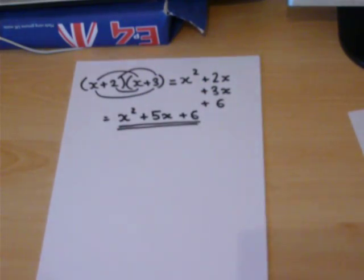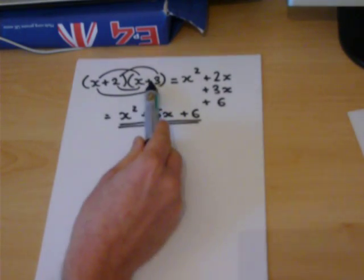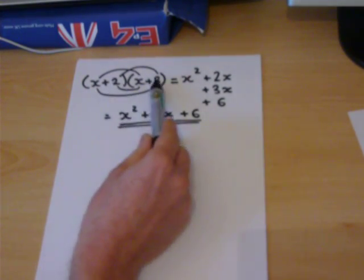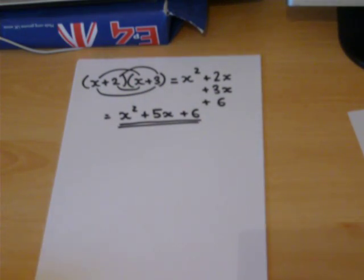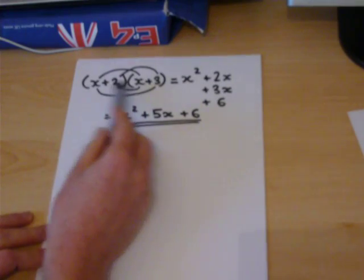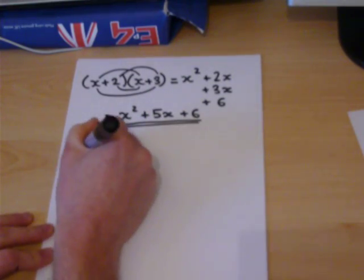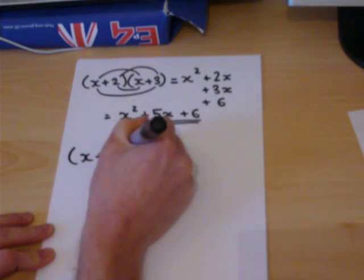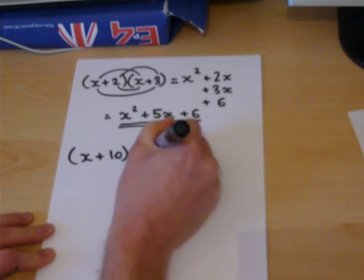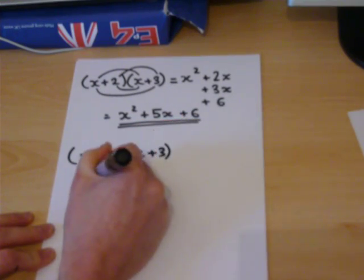Now for these special types of brackets, observe how 2 plus 3 is 5, and 2 times 3 is 6. That gives us a shortcut for expanding brackets of this type. So for example, a shortcut.